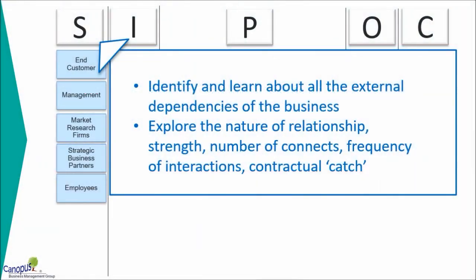Let's go one by one into each of those five different elements — suppliers, input, process, output, and customers — and talk about what you could do uniquely in each of those.